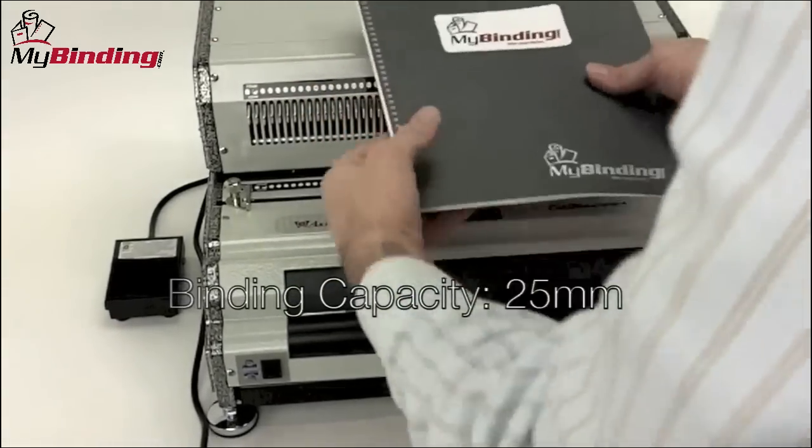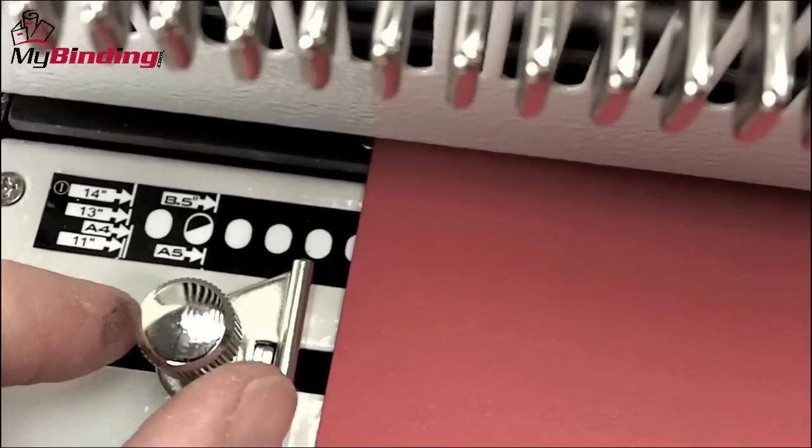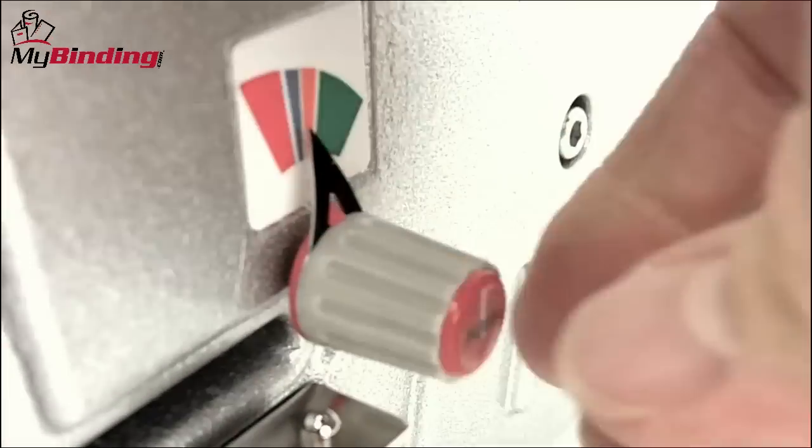And the binding capacity with the electronic inserter is 7 eighths inch. Punching remains consistent both with side margin and depth of margin control knobs.